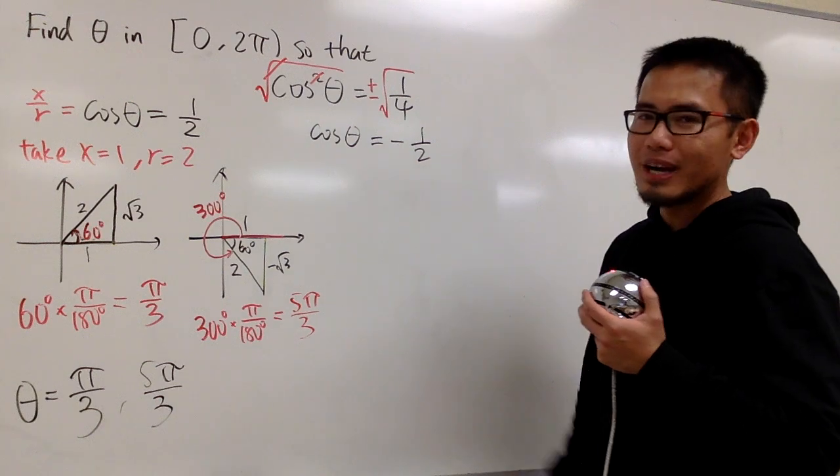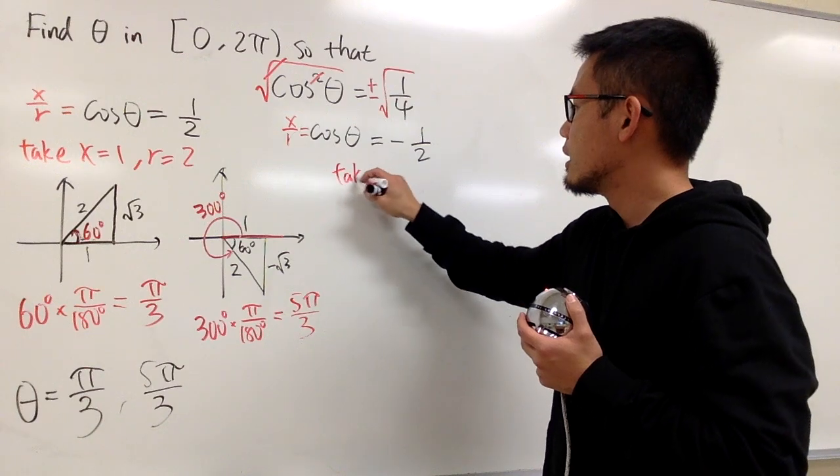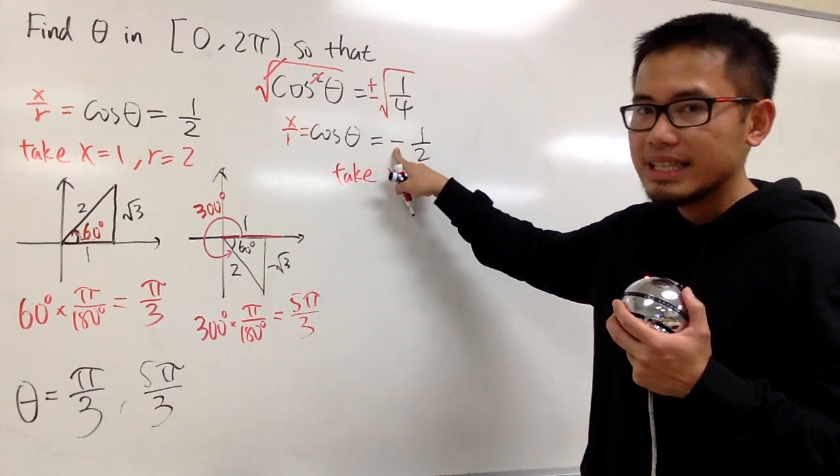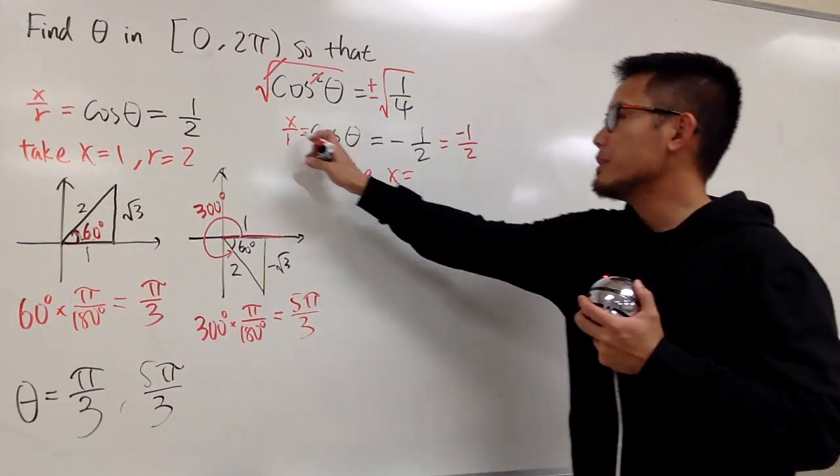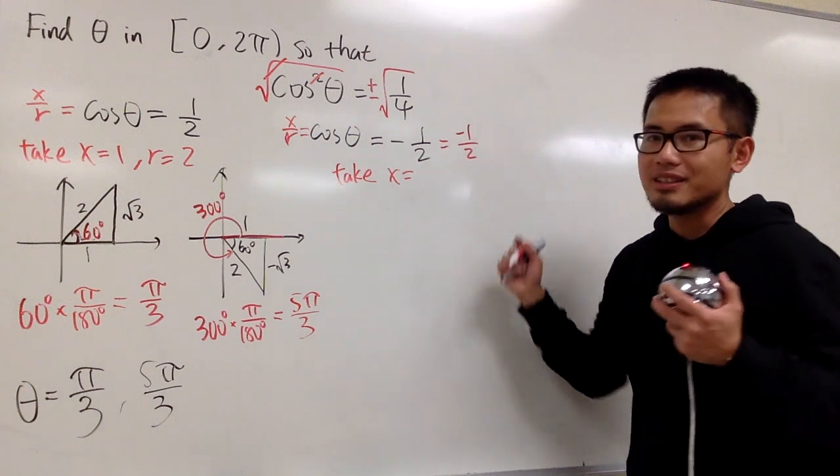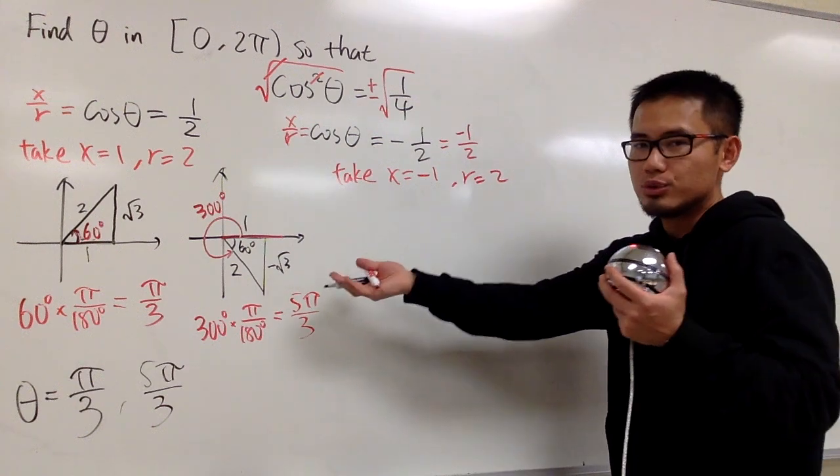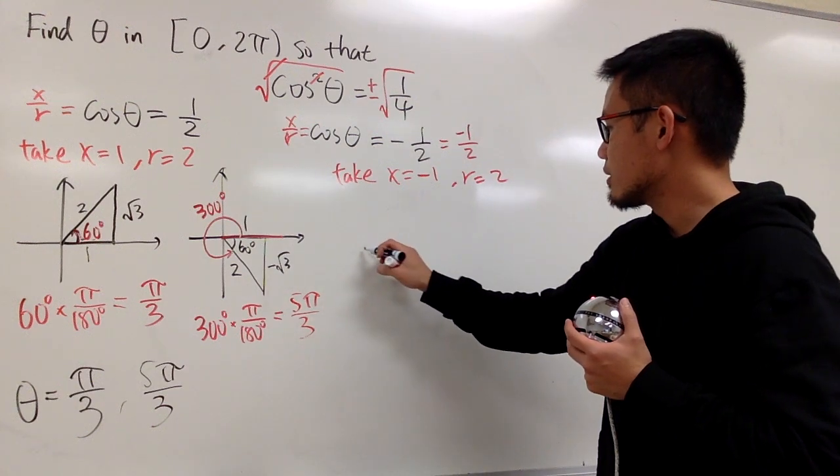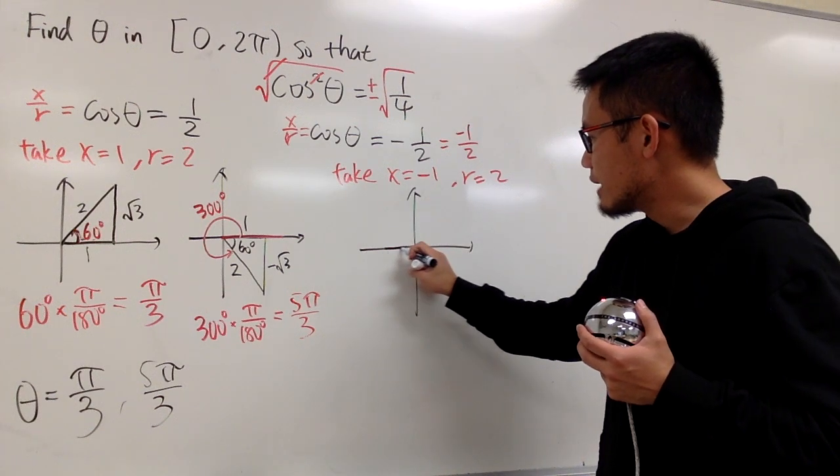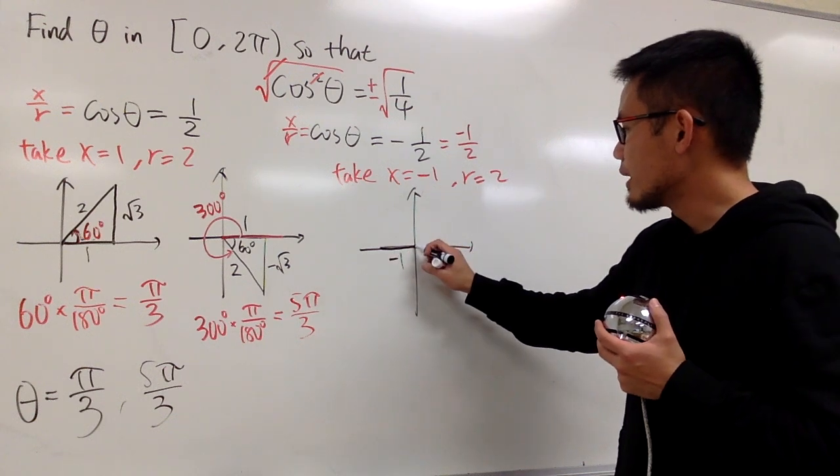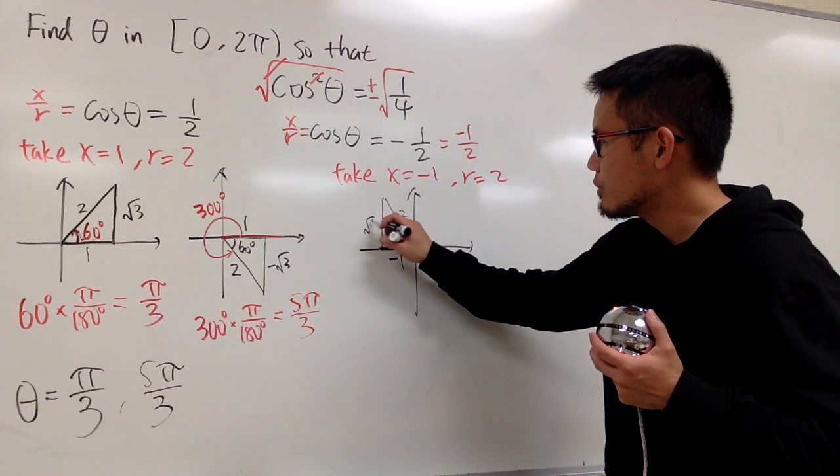And now, we'll work this out. So once again, cosine is x over r. And in this case, we take x to be, I will put the negative up to the top, so this is negative 1 over 2. r can never be negative. That's why the x has to be negative in this case. Take x to be negative 1, r to be 2. And now let's do that again. So in this case, let me draw the first triangle. x is equal to negative 1 now. So I will just go to the left. This is my negative 1. r is 2, so I will do like this. This is my 2. And once again, you know this triangle, this side here is square root of 3.